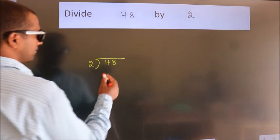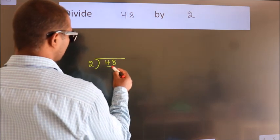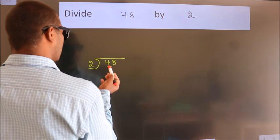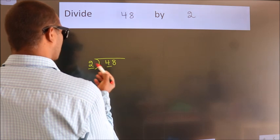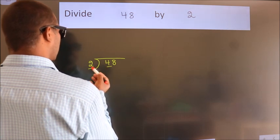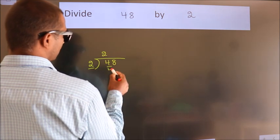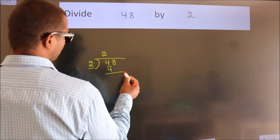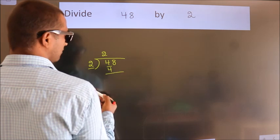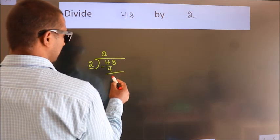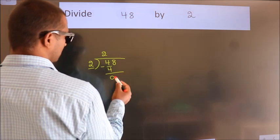Here we have 4, here 2. When do we get 4 in the 2 times table? 2 twos are 4. Now we should subtract. We get 0.